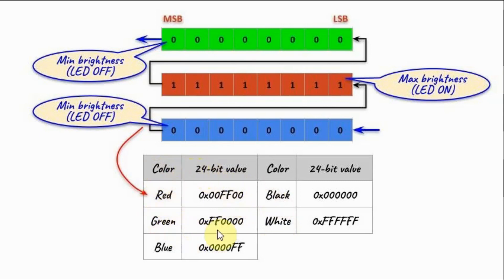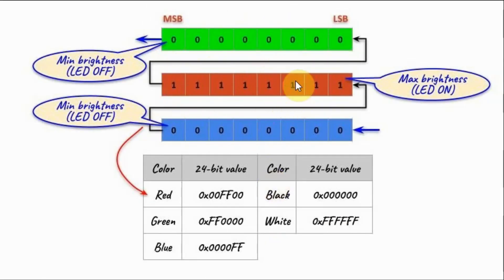This table shows the displaying of the primary colors red, green, and blue. If we send this 24-bit value, we will display red. This value will display green. And this hex value will display blue. To display the black color, we send all zeros. And to display the white color, we send all ones. Mixing the three brightness levels of the three colors will give us 16 million color levels, which is basically 256 times 256 times 256. In this video, we will be focusing only on these five colors so as not to overcomplicate the assembly program.